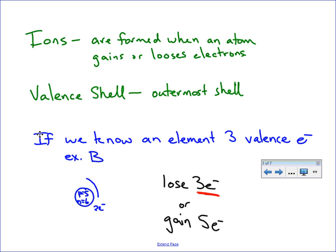Remember, the first shell can only hold a maximum of two electrons. Once it has a full outer shell, it's a nice stable ion. And instead of writing the symbol B, because it's an ion now — our boron ion — we're going to use the symbol B and then represent the charge. By losing three electrons...